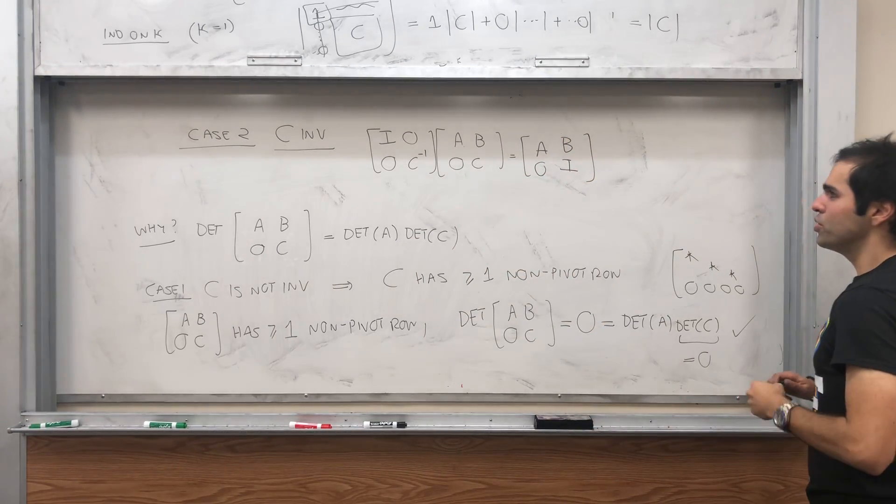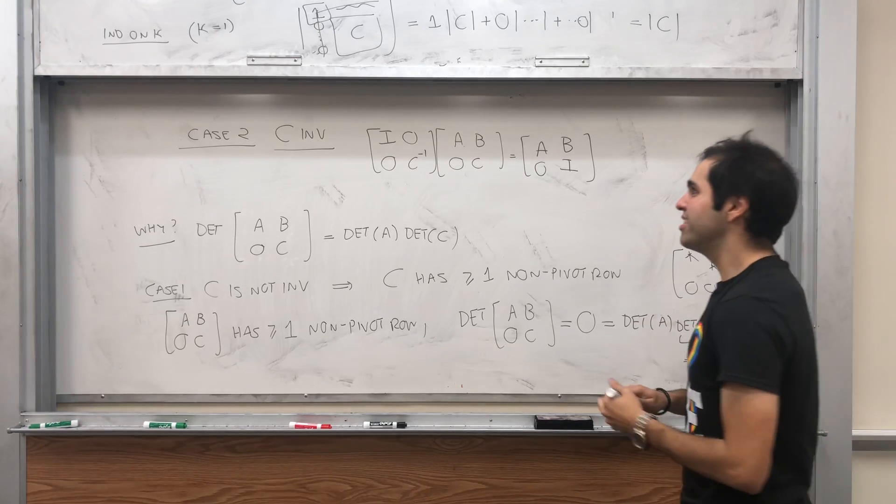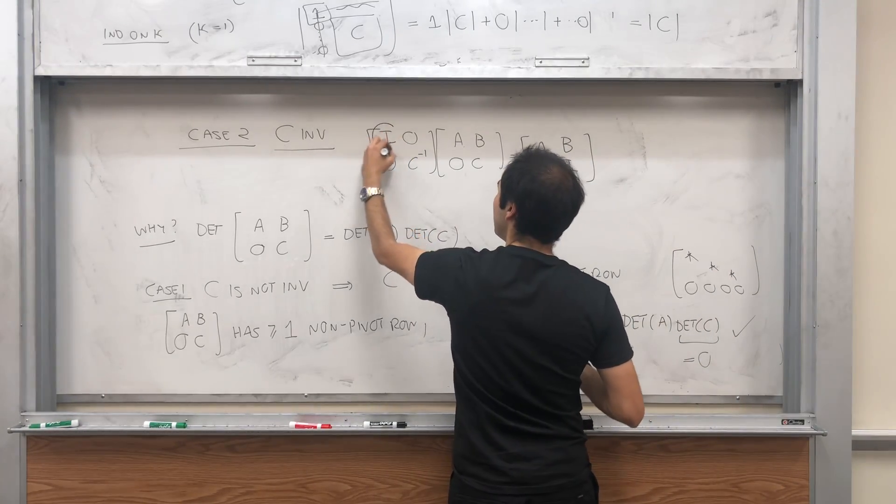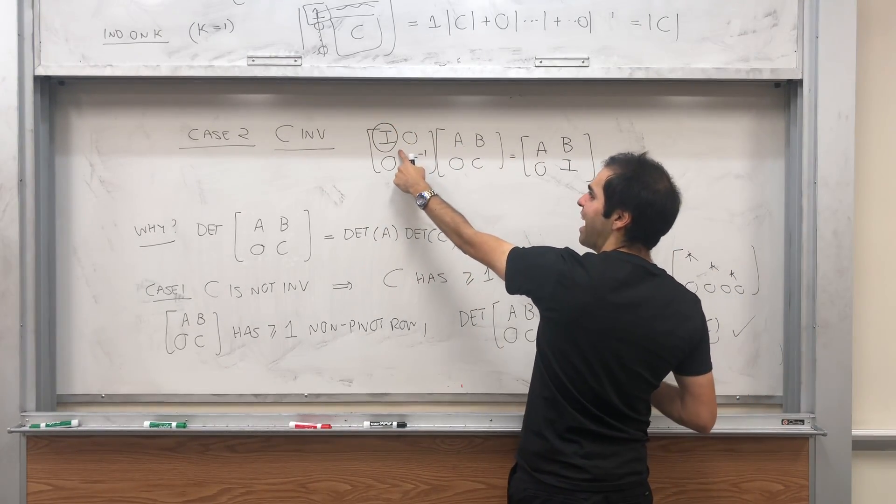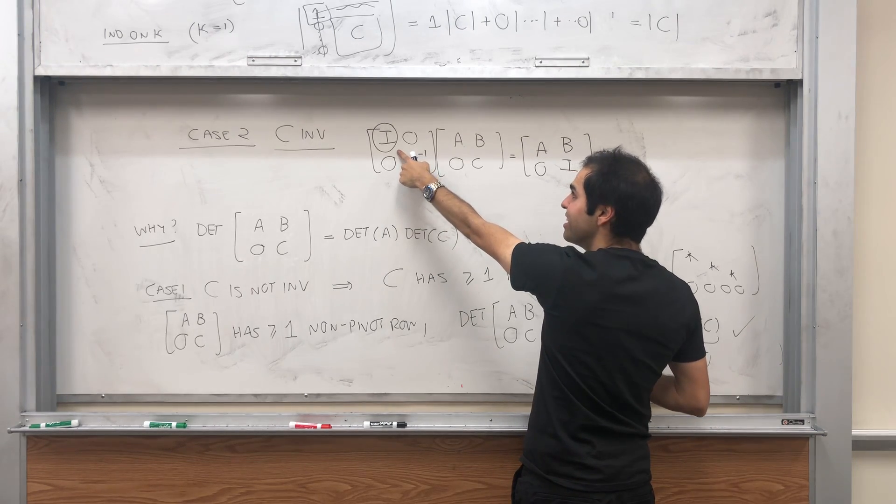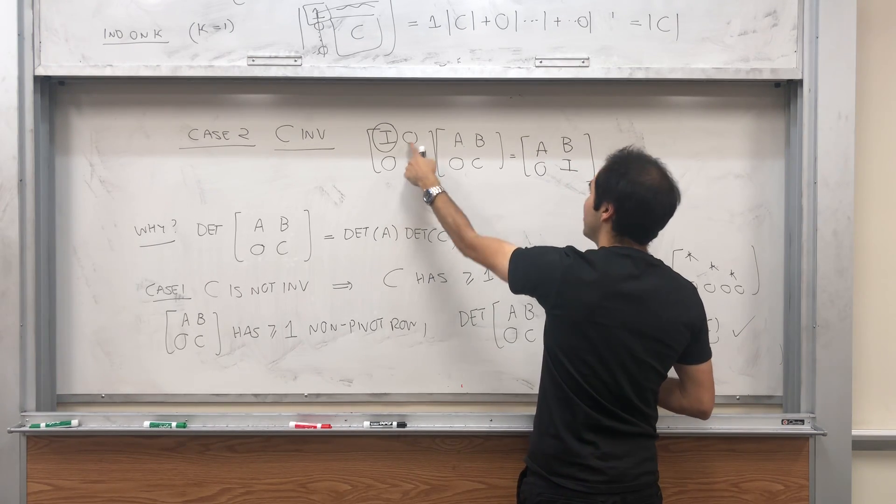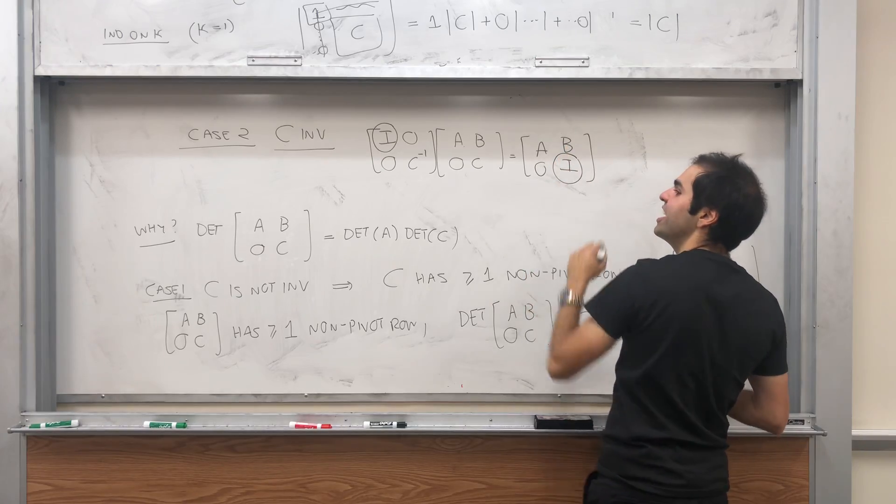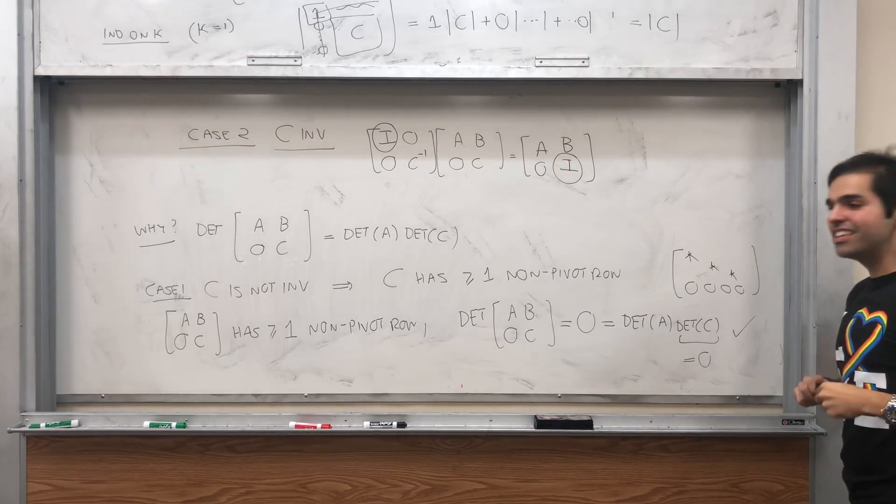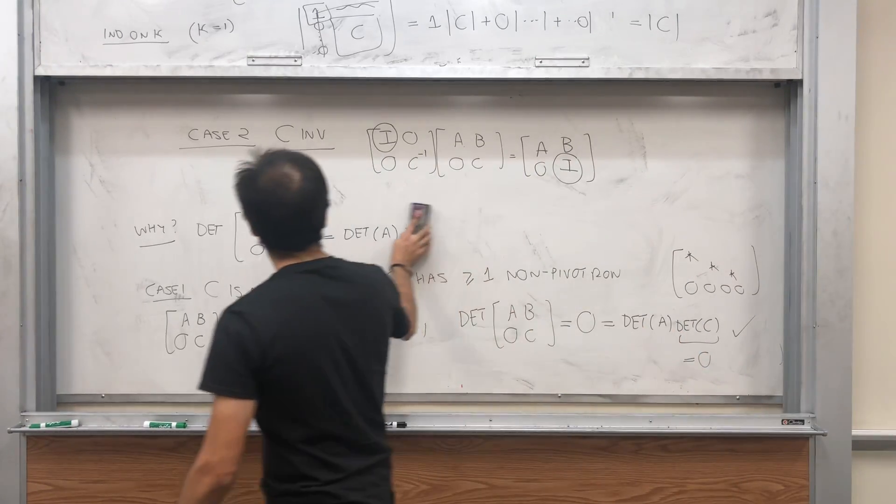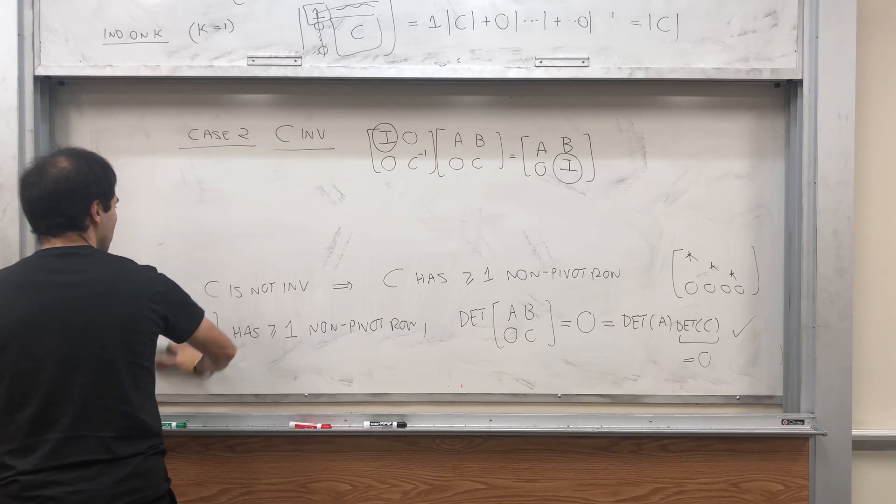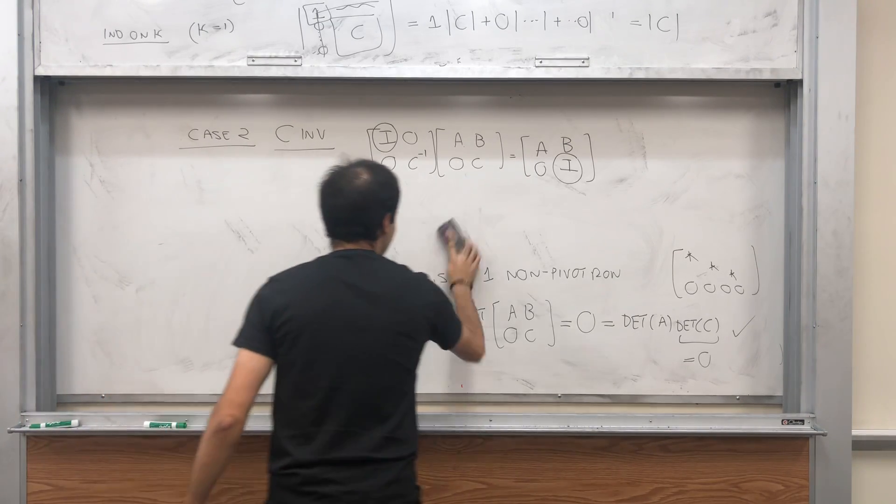So in other words, you do have this. But look, here's the cool thing: we've shown that if you have the identity here, then the determinant is exactly what we want. And if you have the identity here, then the determinant is exactly what we want. So all we need to do is take determinants of both sides.